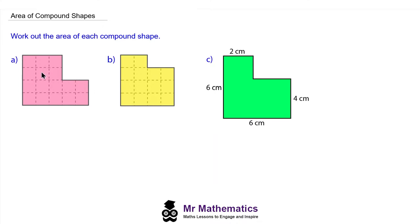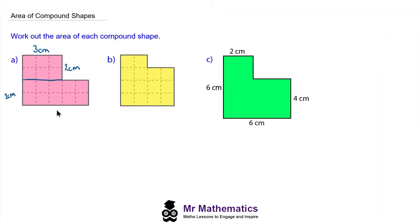To work out this area we're going to split it up into two different rectangles, and we can do this by drawing a line along here. So now you can see we've got two rectangles: the top one which is three centimeters by two centimeters, and the one below it which is two centimeters by five centimeters.